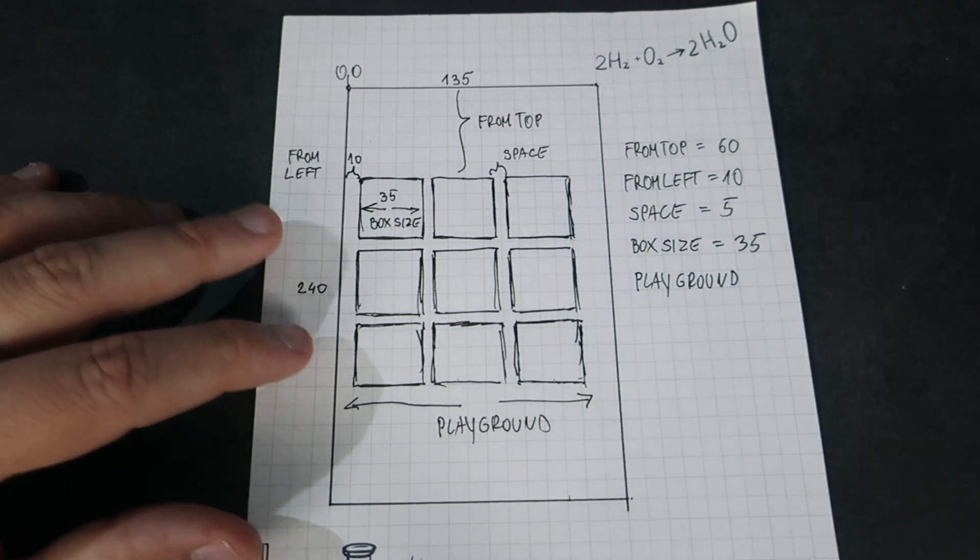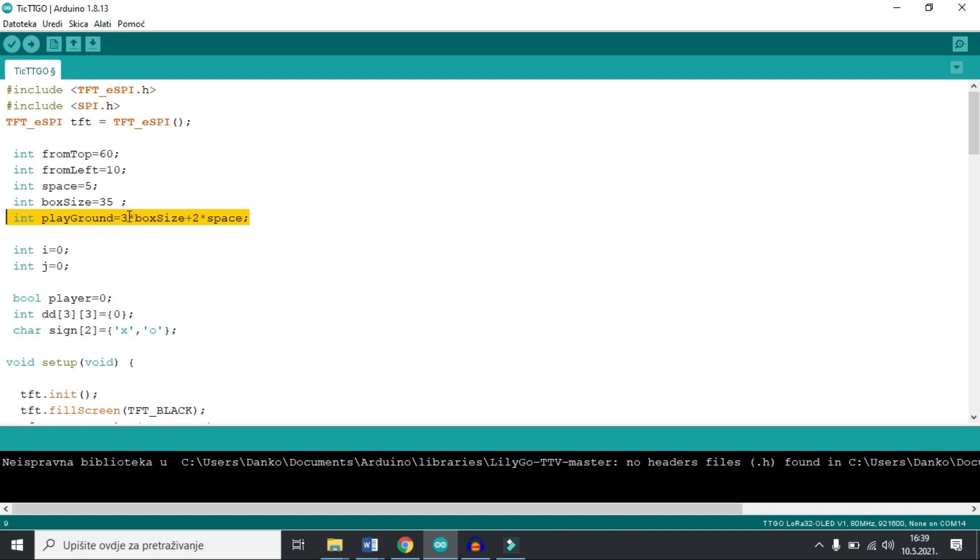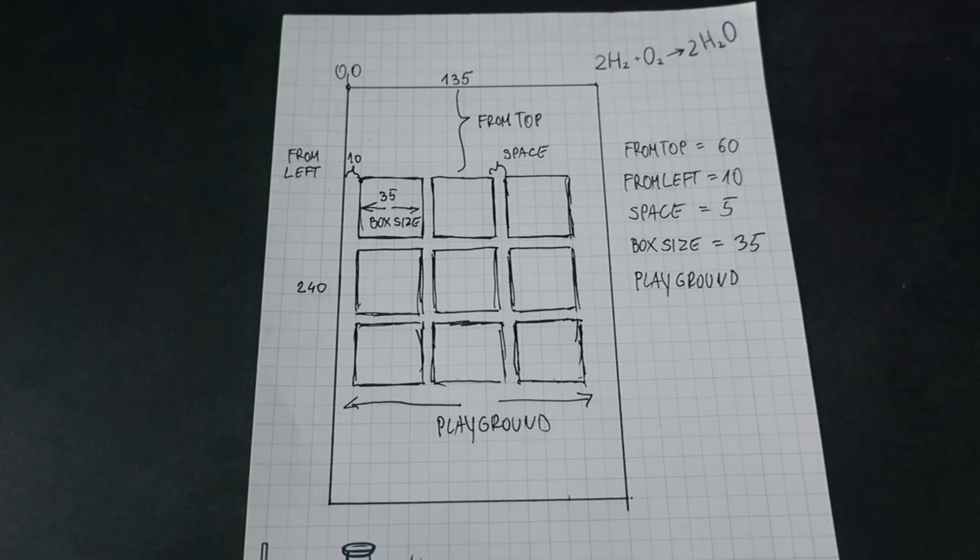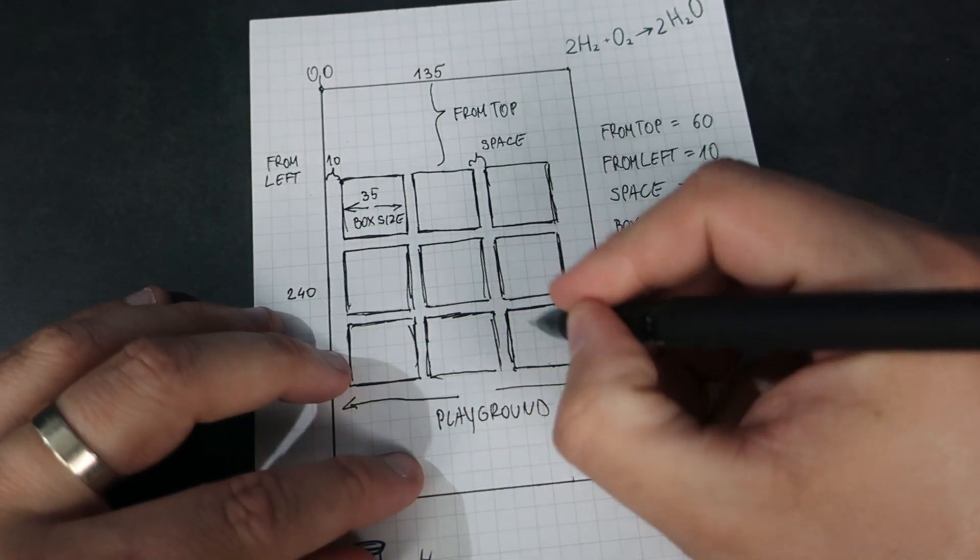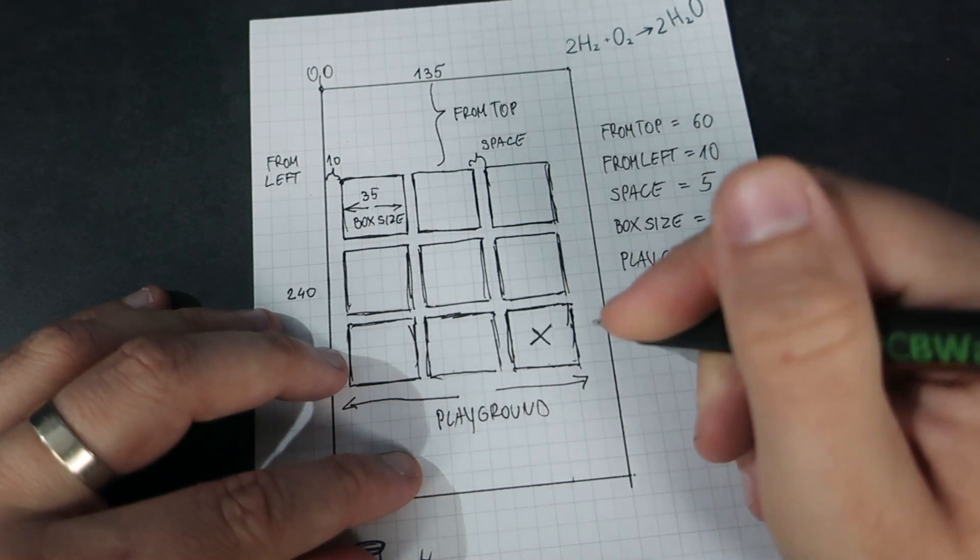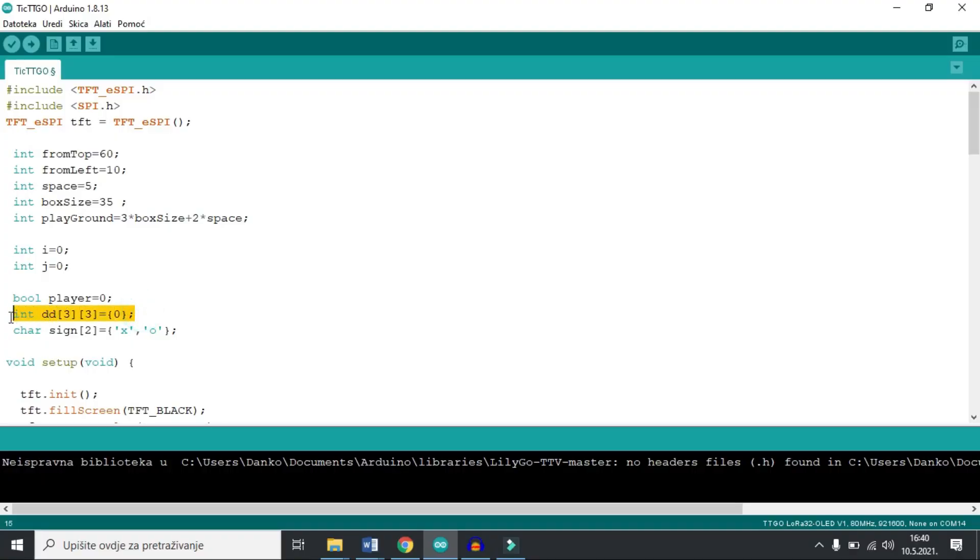Here we have other variables. For example, player, which is a bool type of data, because there can be only two players and bool variables have only two states, 0 or 1. So we can say there is player 0 and player 1. Each box can be empty or contain X or O. This data is stored in a two-dimensional array called dd. Don't ask me why I gave this name to this array.